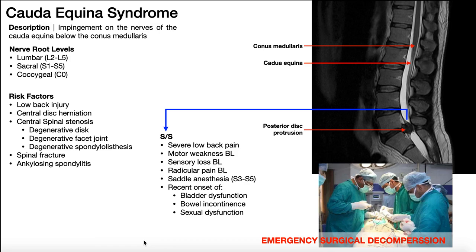If somebody comes into your clinic with this presentation and you're thinking they might have cauda equina syndrome, you need to get them in contact with their MD or even the emergency room quickly, because it requires an emergency surgical decompression — removing whatever is compressing the cauda equina, such as a posterior disc protrusion, to relieve that pressure. This is not necessarily life-threatening, but to preserve the function of those nerves and your entire lower extremity and hip girdle function, surgical decompression is needed. The best results are when this is done within 24 to 72 hours of symptom onset. The longer you let it go, the more likely these impairments are to be permanent, which would drastically affect somebody's function and independence.